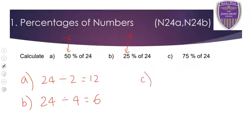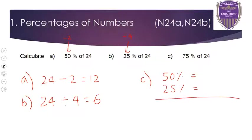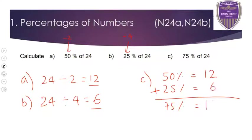For 75% there are a couple of different ways. We can either do 25% and take it away from 100, or do 25% and times it by 3. The most common method is to do 50% first, write that down, then do 25% afterwards, and add those together. Because 50 plus 25 is 75. We already worked out 50% is 12 and 25% is 6, so adding them gives us 18. That's the first set done.